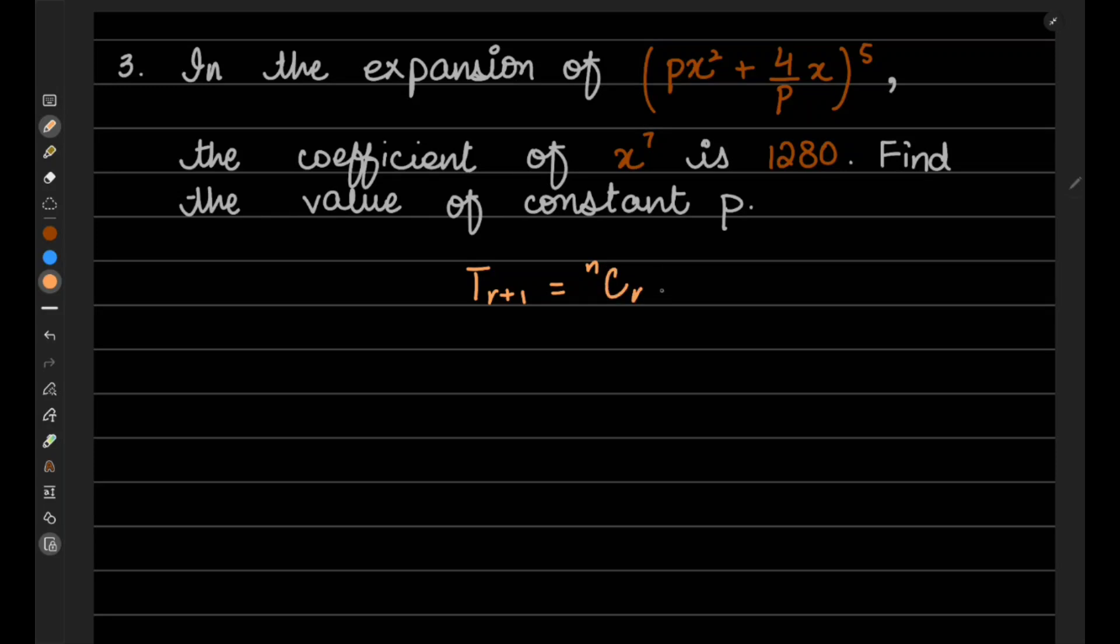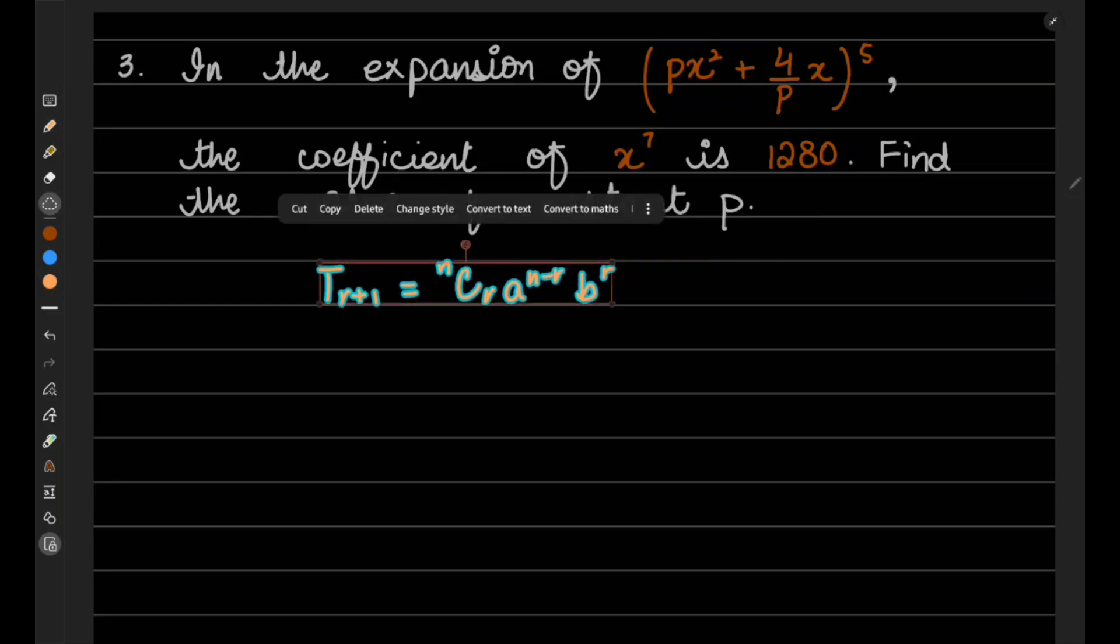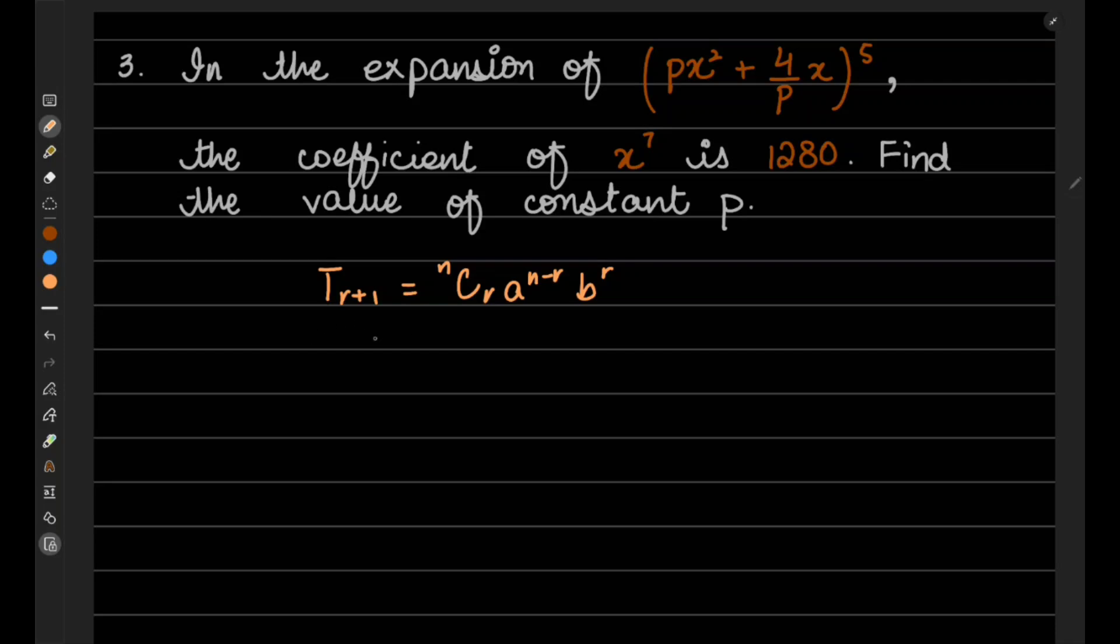So we have T_(r+1) equals nCr a^(n-r) b^r. Now substituting in the values, we know what is n, what is a, what is b. So n is 5Cr.